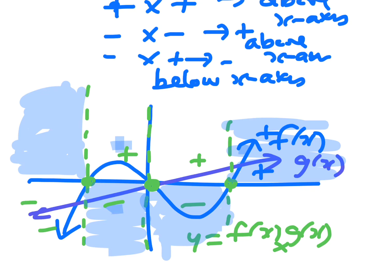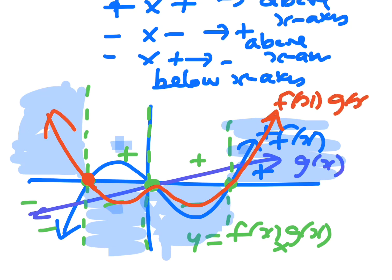So your resulting curve — let's do it in red — has to go through these dots: here, down here, down there, and then back through there. That will be your f of x times g of x — your resulting function.